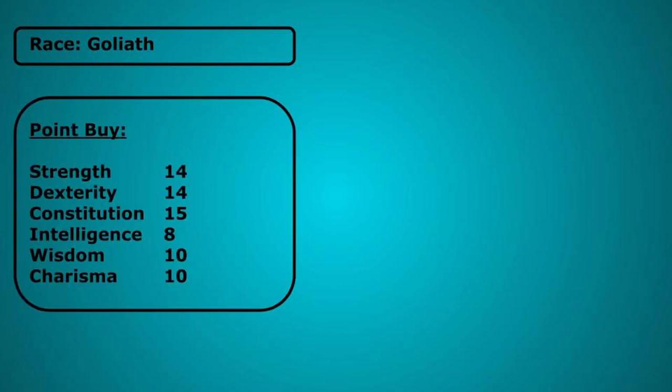Using point buy, we select 14 Strength, 14 Dexterity, 15 Constitution, 8 Intelligence, 10 Wisdom and 10 Charisma. Racial bonuses will bring both Strength and Constitution to 16.